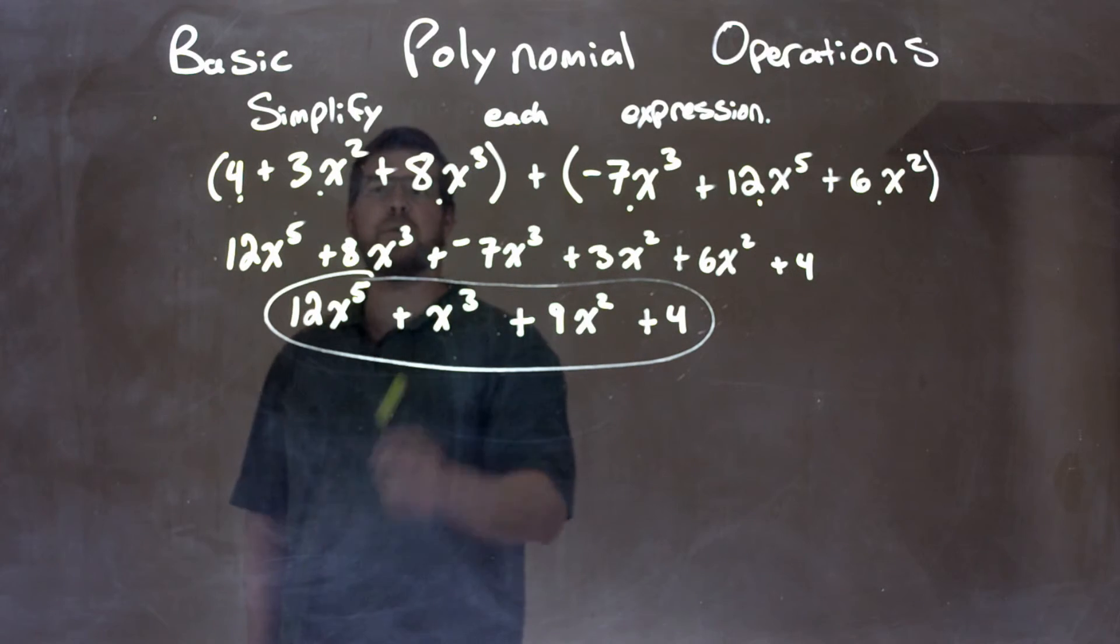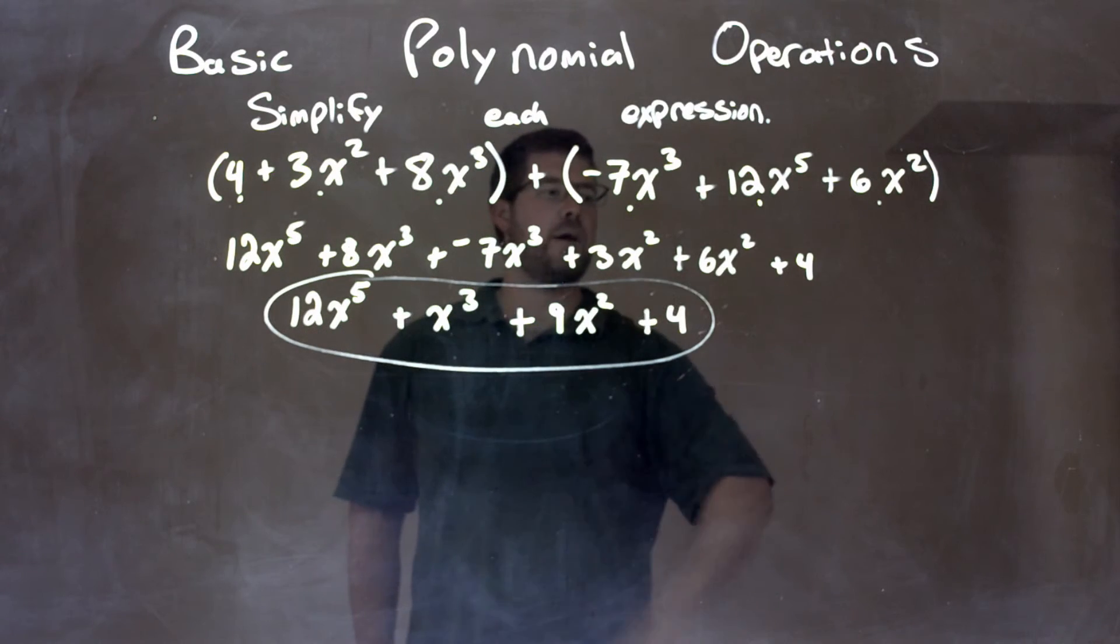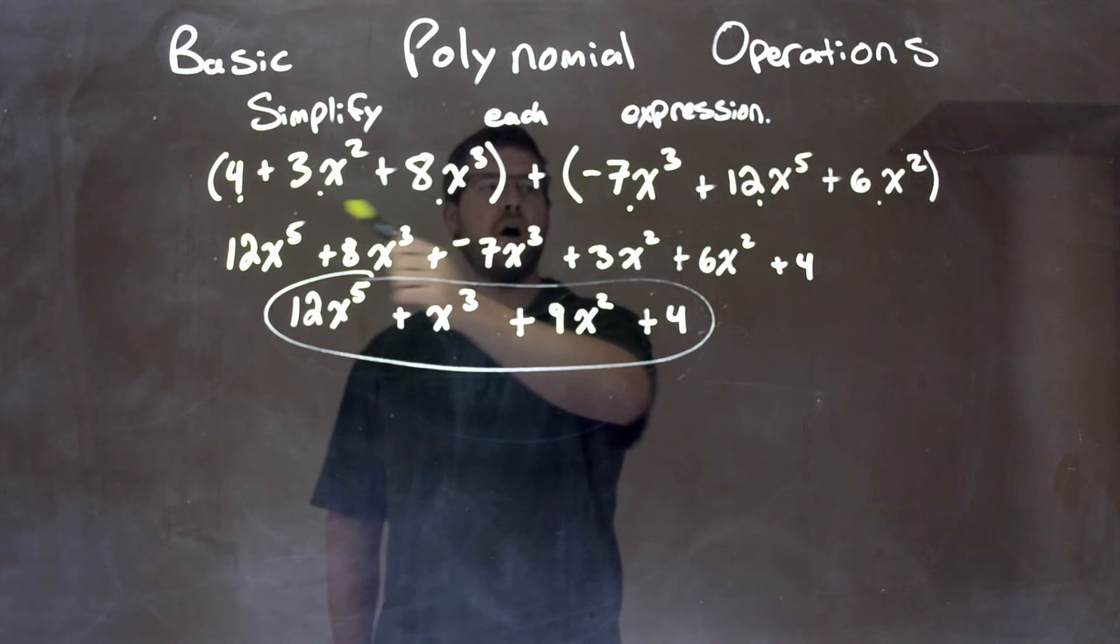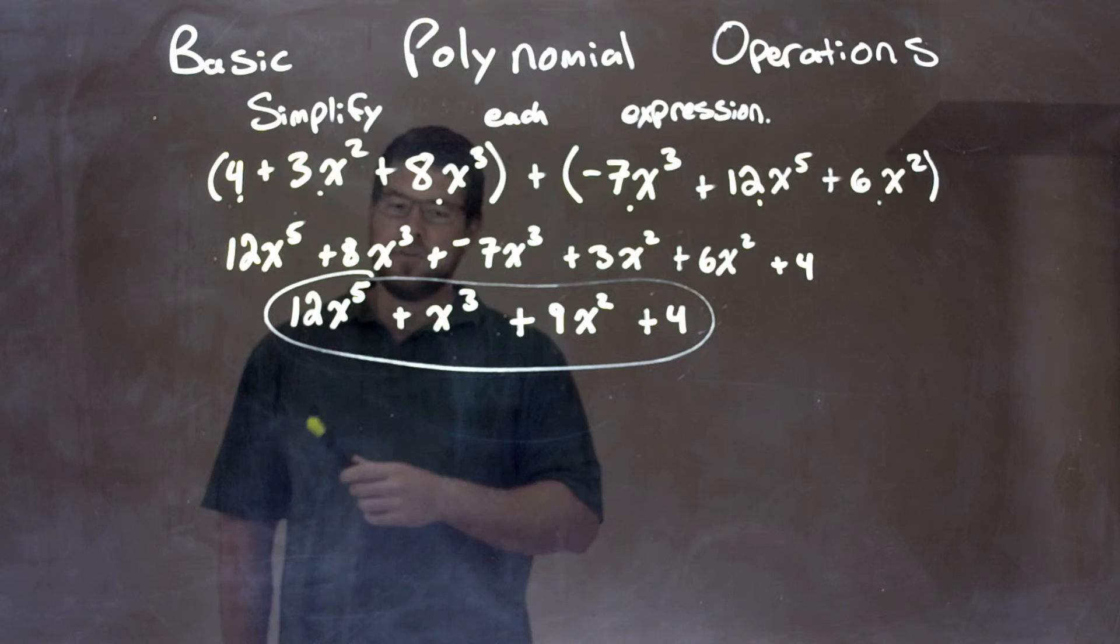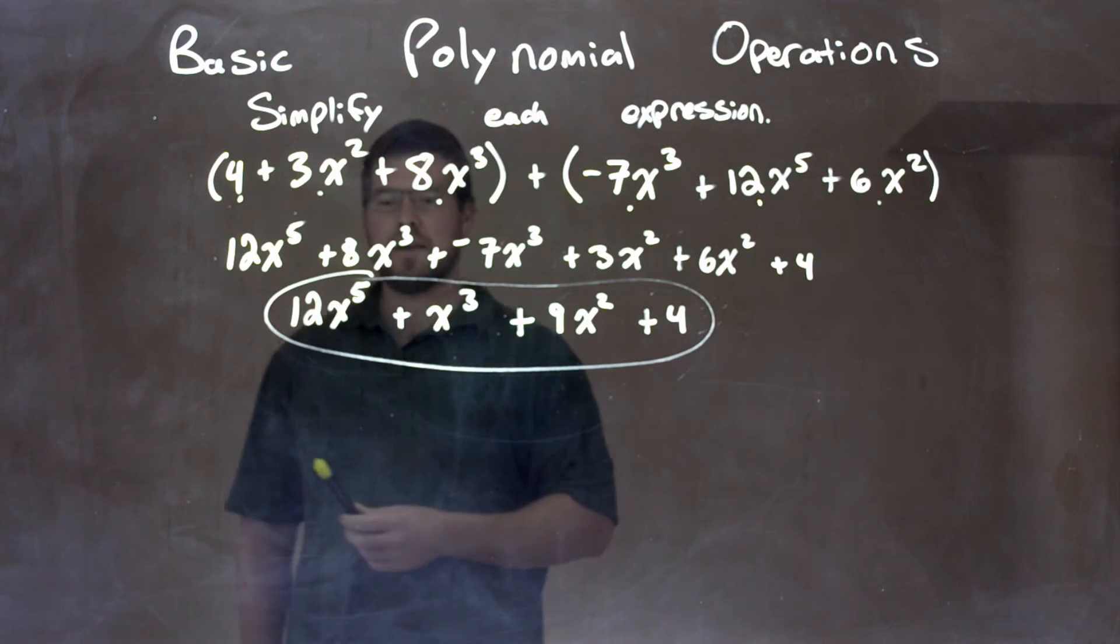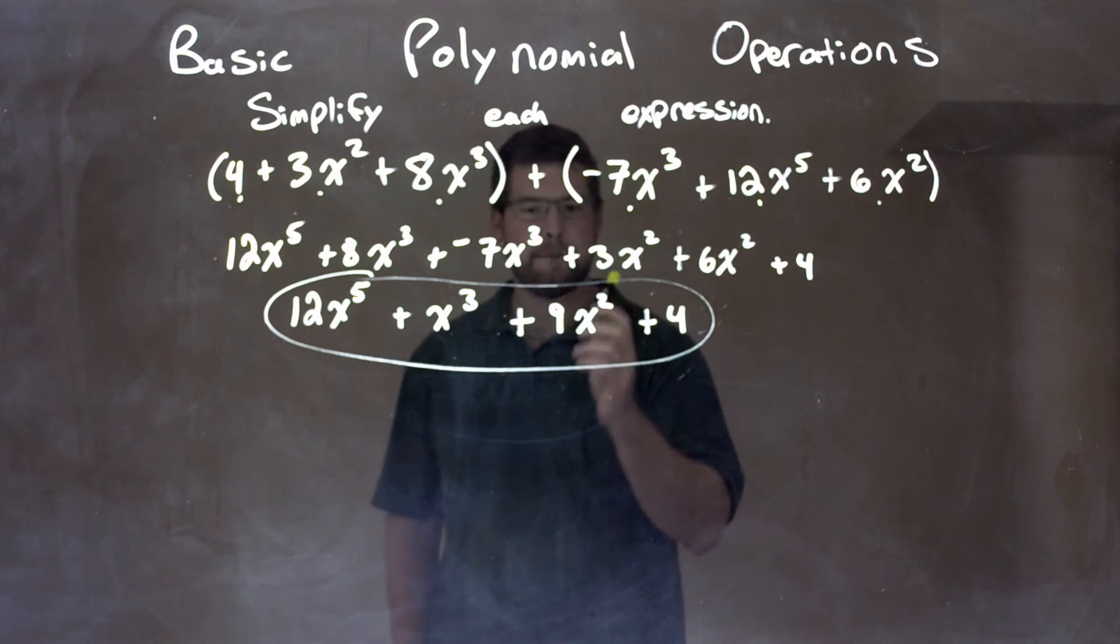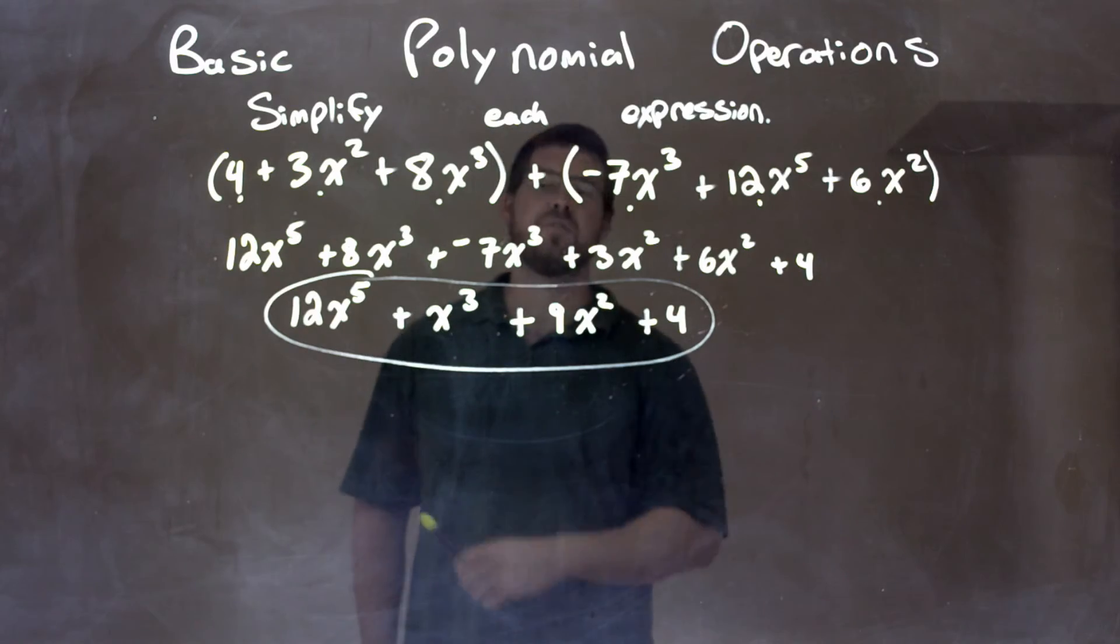So we add the fifth powers, then we go to the third powers, then the second powers, then our constant, and we had all the terms brought down. Then we combine our like terms, and that gave us our final answer again, which was 12x to the fifth plus x to the third plus 9x squared plus 4.